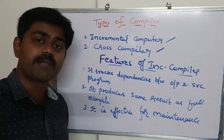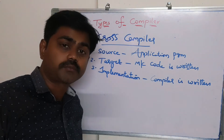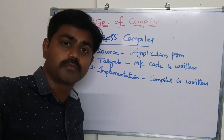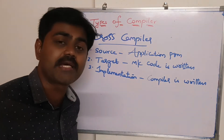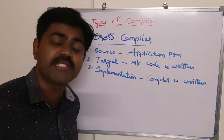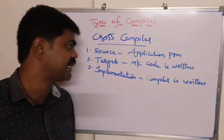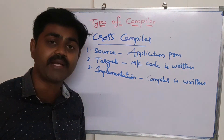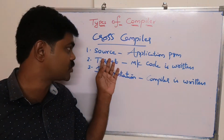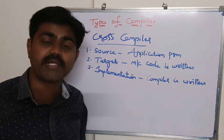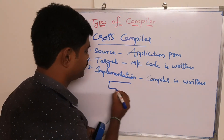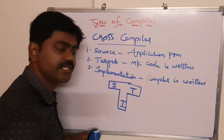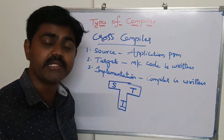The second type is cross compiler. A cross compiler contains three components: one is source, which is your application program; second is target, which is your machine code in machine-understandable format; and third is implementation, which is the language in which the compiler is written. In shorthand, we write it as: source, target, and implementation.